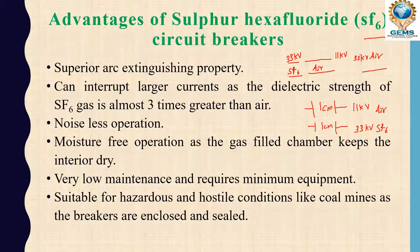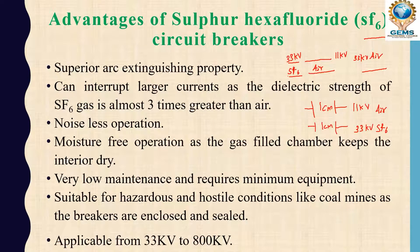It is suitable for hazardous and hostile conditions like coal mines. Since the breaker is enclosed and sealed, we can use it anywhere - even in coal mines where fire is very dangerous. It is also applicable from 33 kilovolt to 800 kilovolt, making it usable across a very wide voltage range. These are the advantages of the SF6 circuit breaker.